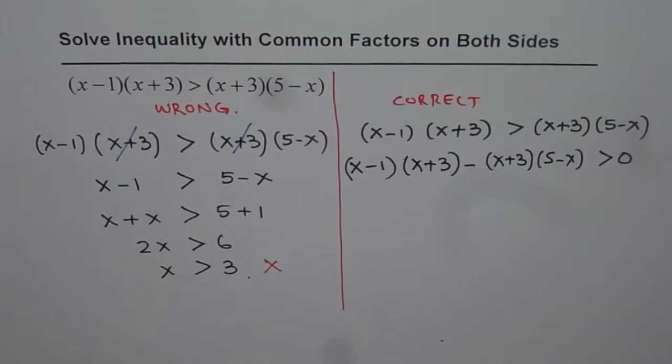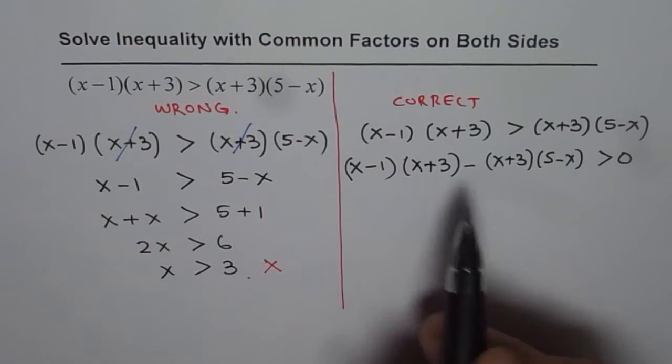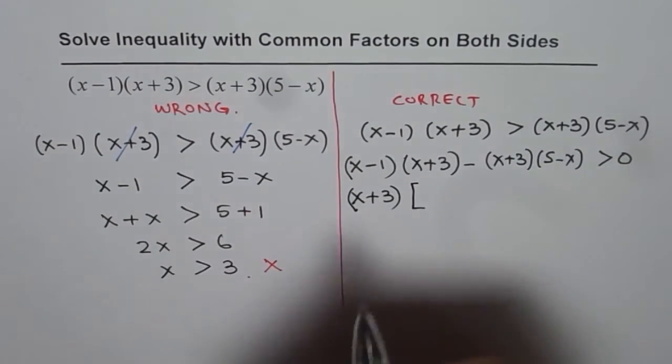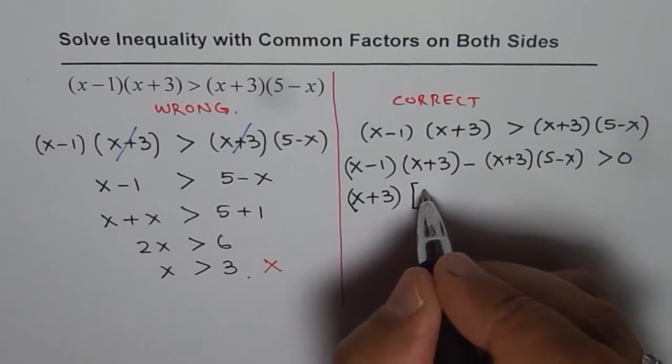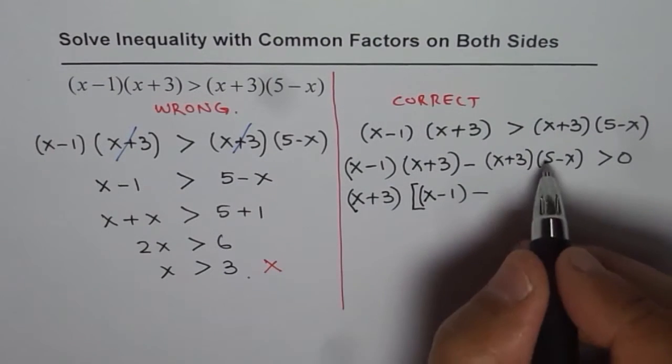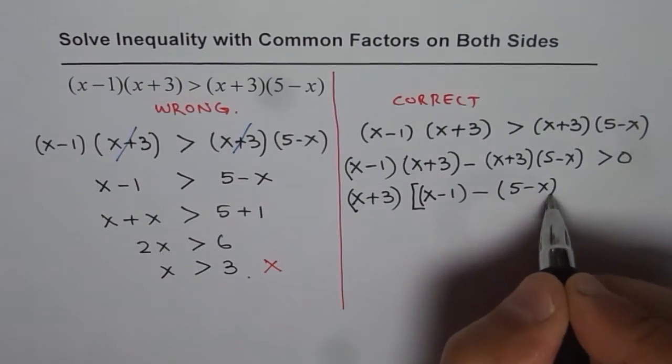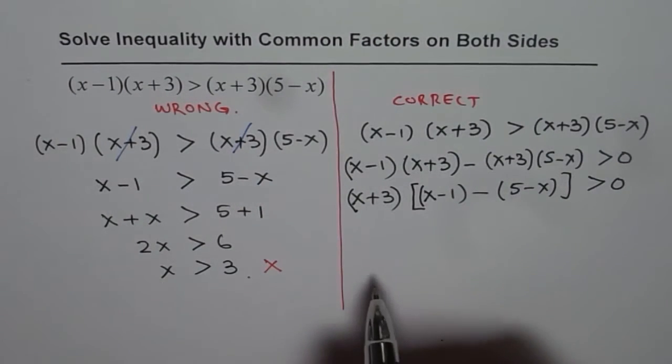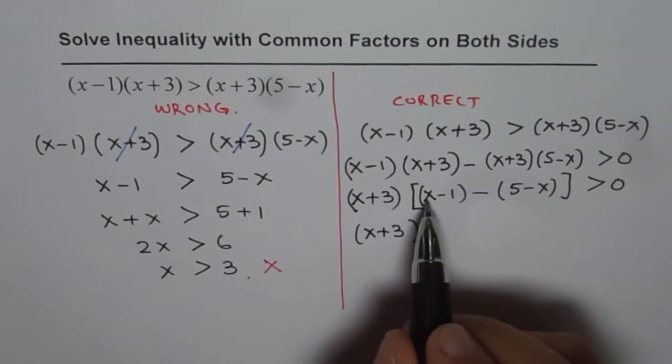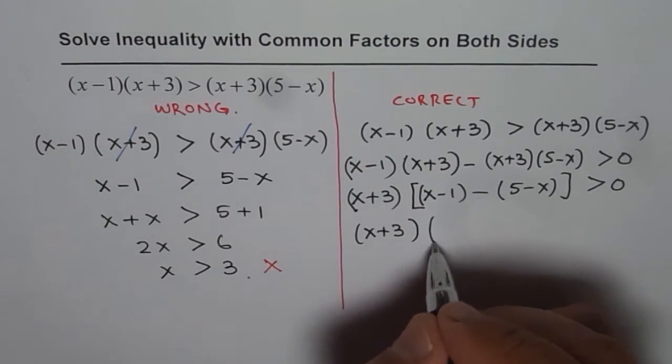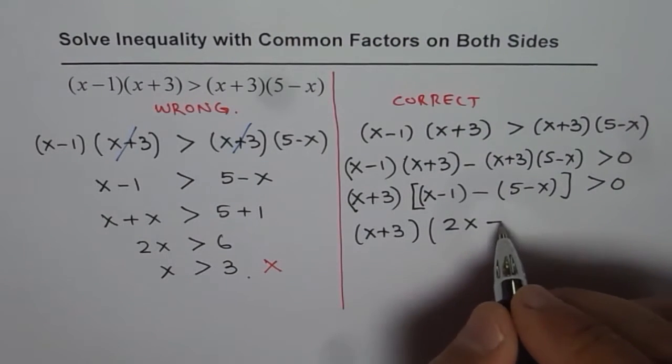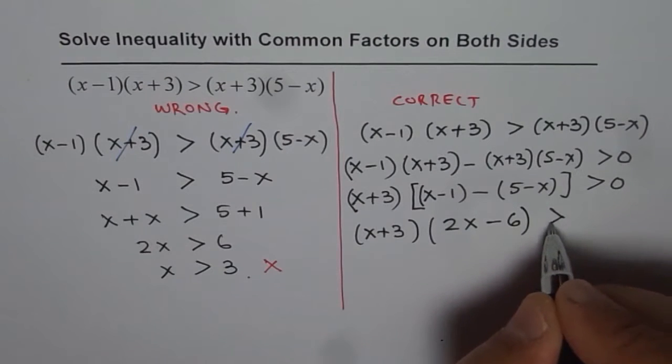Now we have a common factor, so let's factor it. We get (x+3) as a common factor. You get (x+3)[(x-1) - (5-x)] > 0. Now you can simplify this. x minus -x gives 2x. 2x - 1 - 5 gives -6, so (x+3)(2x-6) > 0.